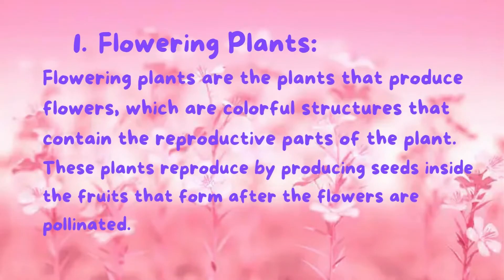Kids! As their name tells us, flowering plants are plants that produce flowers. Flowers are colorful structures that contain the reproductive parts of the plant. These plants reproduce by producing seeds inside the fruits that form after the flowers are pollinated.